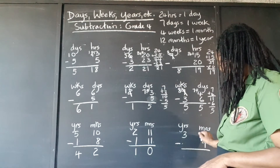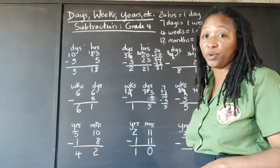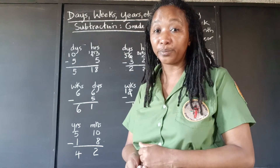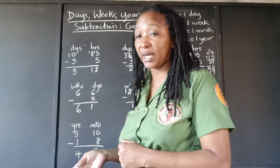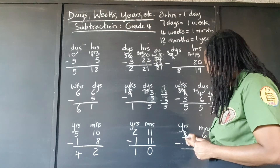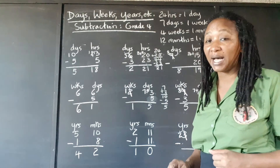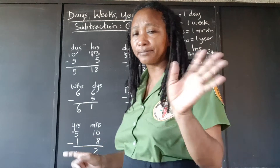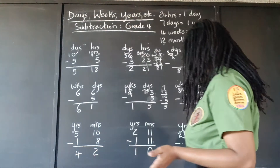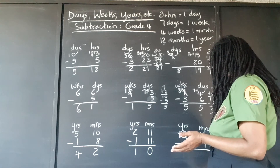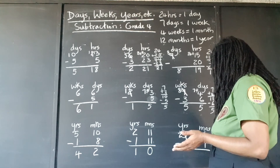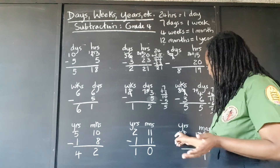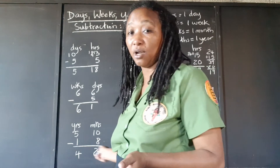Here we have 3 years and 6 months, subtract 9 months. We know we're not going to be able to take 9 months from 6 months, so we're going to need some backup. We go over to the 3 years, take 1, leaving 2 years, and bring it over as 12 months. We add 12 and 6 to get 18, then take away 9 — that's 9 months. So we have 2 years remaining.